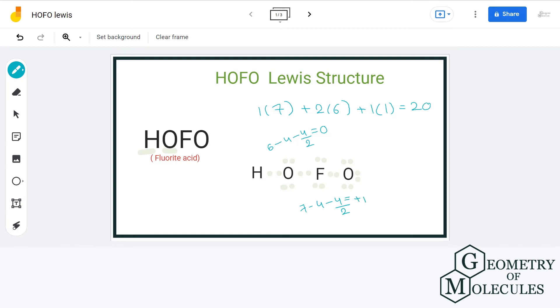For terminal oxygen, we have six valence electrons minus six non-bonding electrons minus two bonding electrons divided by two, giving us a formal charge of minus one.